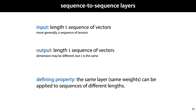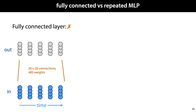To illustrate that principle, let's look at some examples, and see whether they are sequence-to-sequence layers or not. For instance, here we see a fully connected layer. We have an input sequence of five vectors, each containing four numbers, and an output sequence also of five vectors, each containing four numbers.